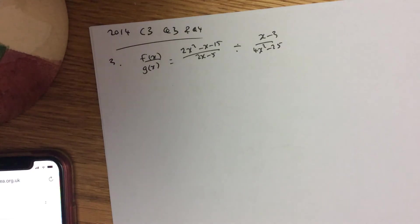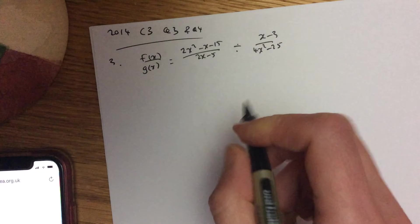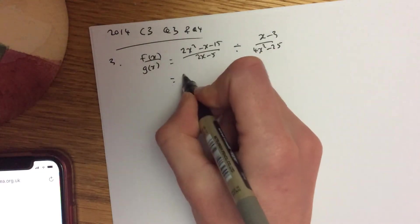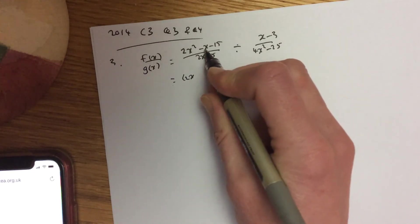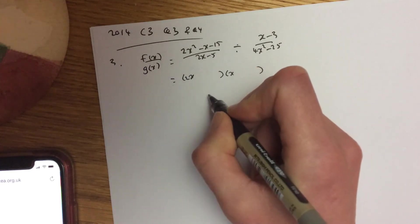Now hopefully you know that whenever you're doing that, you have to factorise your fractions. So this one here starts off 2x squared, so it's a 2x and an x. 15 is a 5 and a 3, and I want the outsides and insides to give me a 1.